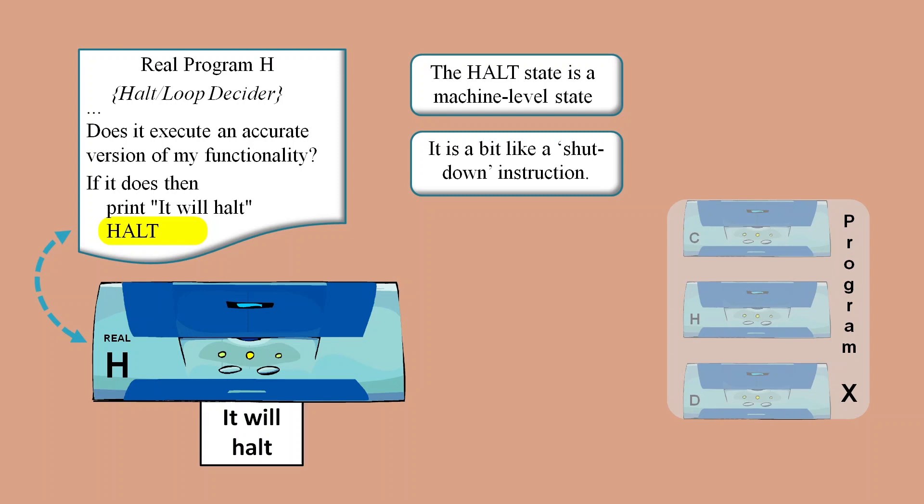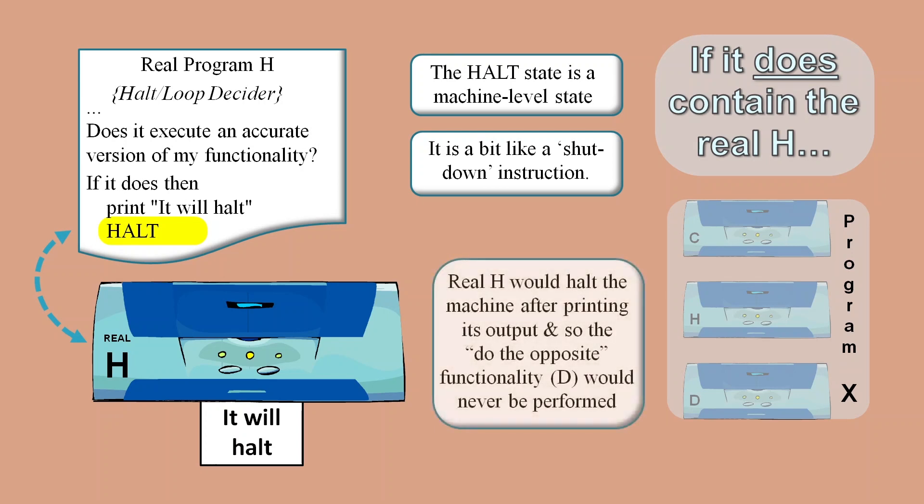Then within program X, after functionality H has produced its output, it will do a machine level halt that will force program X to stop. So it will never reach functionality D that tries to do the opposite of what H says, which means it will not be able to contradict the output of functionality H.